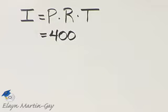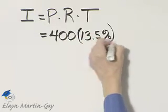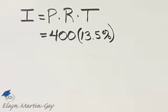What was the rate? It's 13 and 5 tenths percent. So we'll multiply by 13 and 5 tenths percent, and then be very careful with the time.